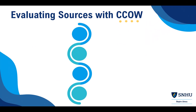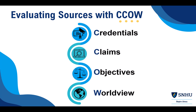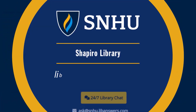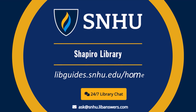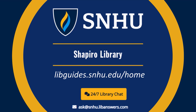Evaluating sources means understanding different perspectives and checking your own bias for a more balanced view. In summary, using CAO helps you critically evaluate the quality and reliability of information. Check credentials for credibility, evaluate claims by investigating their research trail, understand objectives to gauge intent, and consider worldview to understand different perspectives. If you have any questions about CAO, feel free to reach out to our friendly librarians by using the 24-7 library chat button on the homepage of the library website or emailing ask at snhu.libanswers.com. Thank you for watching this video and good luck with your research!